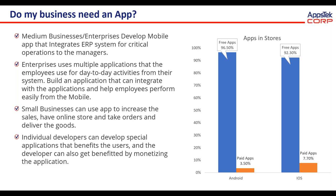Organizations can also send region- or location-specific notifications to employees. Small businesses can develop an app to increase their sales, take orders, and deliver goods. For individual developers, they can develop specialized applications that benefit the majority of users and also get benefited by monetizing the app through various programs. Currently, 96.5% of apps in Android are free, and for iOS it is 92.5%.